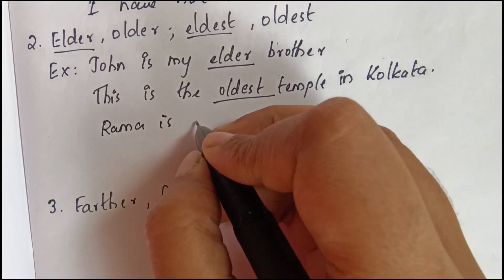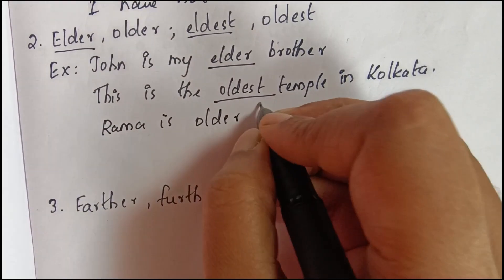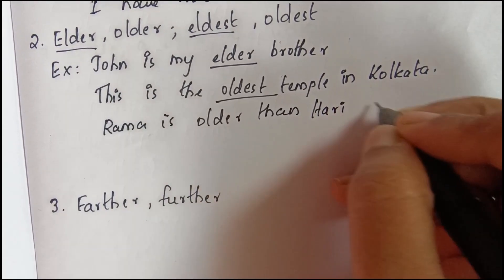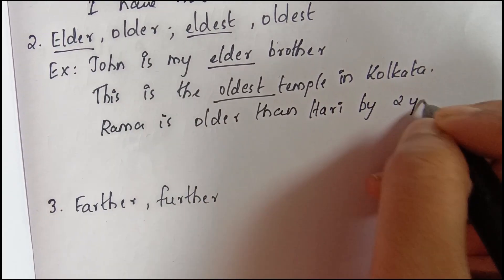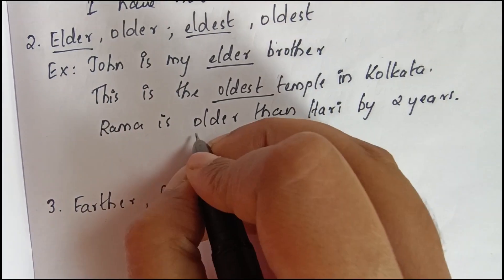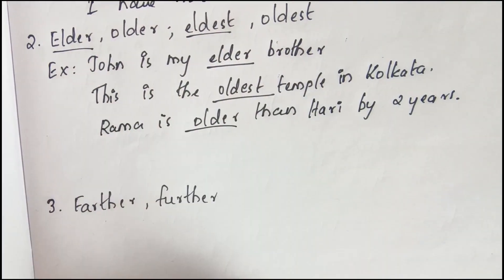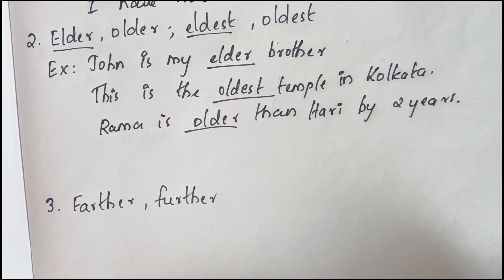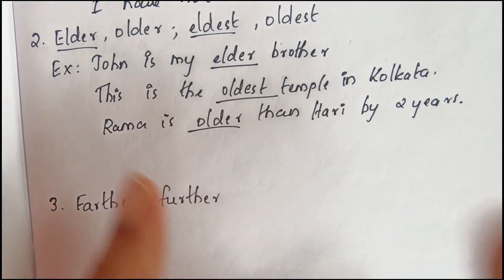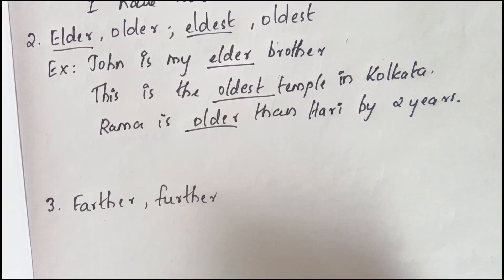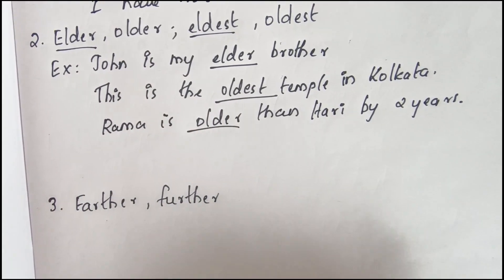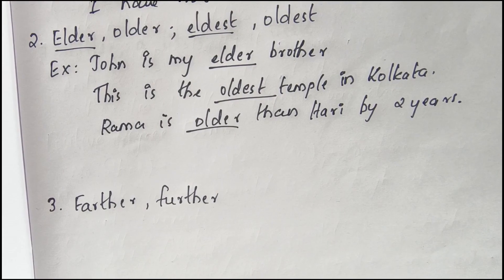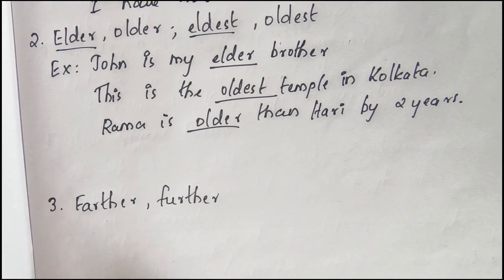If the persons are not of the same family, you use the word older. For example: 'Rema is older than Harry by two years.' Here we use older because they are not of the same family. That is the use case of elder, older, eldest, and oldest.